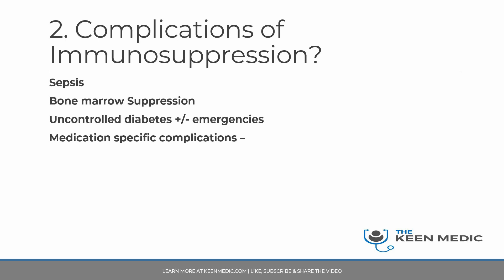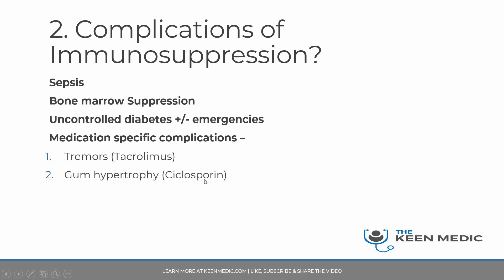Medication-specific complications also occur. For tacrolimus, tremors are common — a top tip: T for tremors, T for tacrolimus. For cyclosporine, gum hypertrophy is a known side effect. Cyclosporine has also been known to cause hypertrichosis — increased hair growth. Haemorrhagic cystitis is associated with cyclophosphamide, though cyclophosphamide is much less commonly used now. Tacrolimus is very common, so you should definitely know that tremors are associated with it.